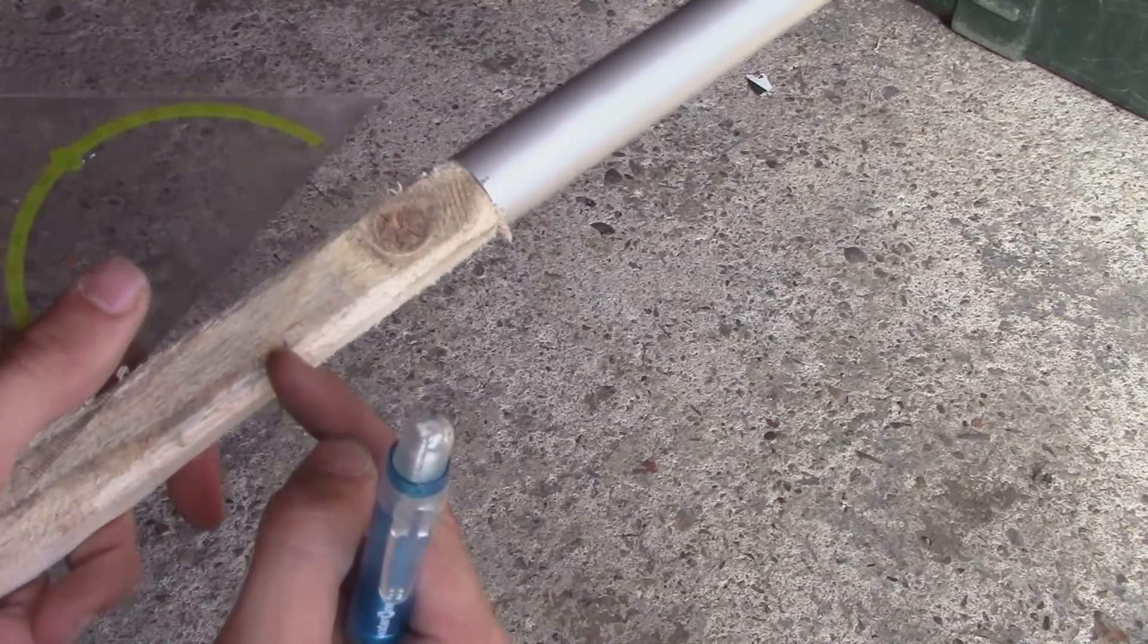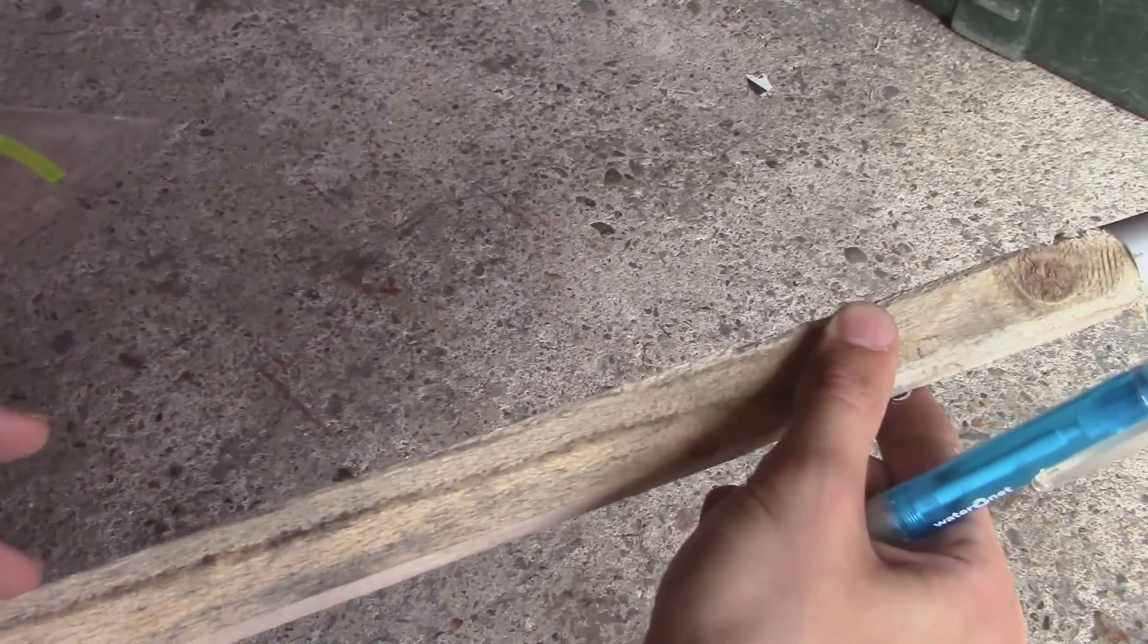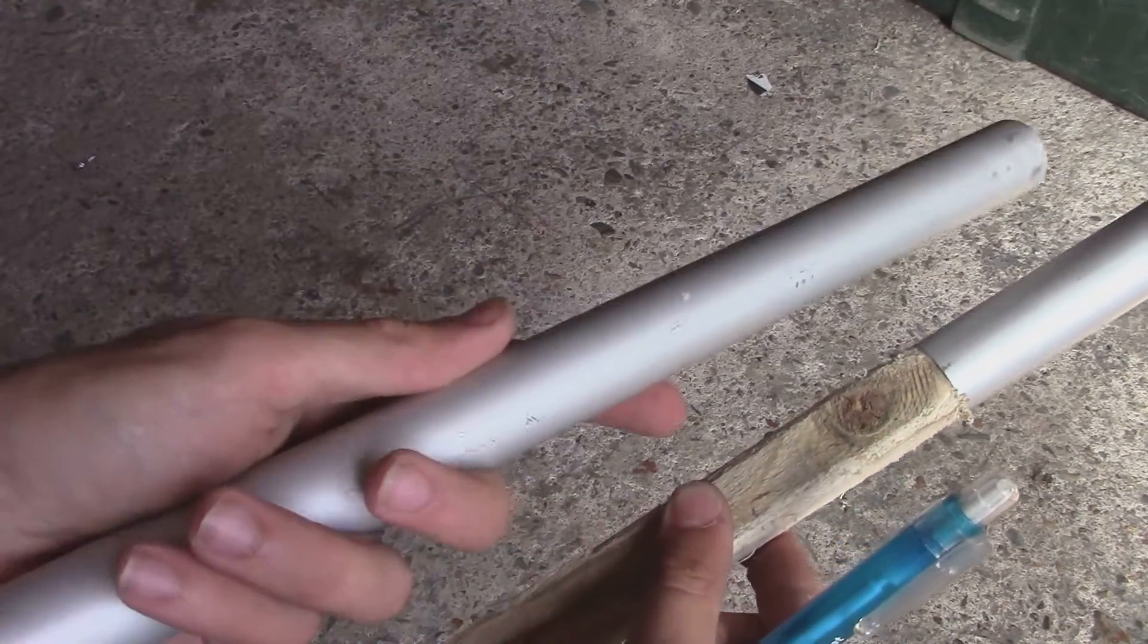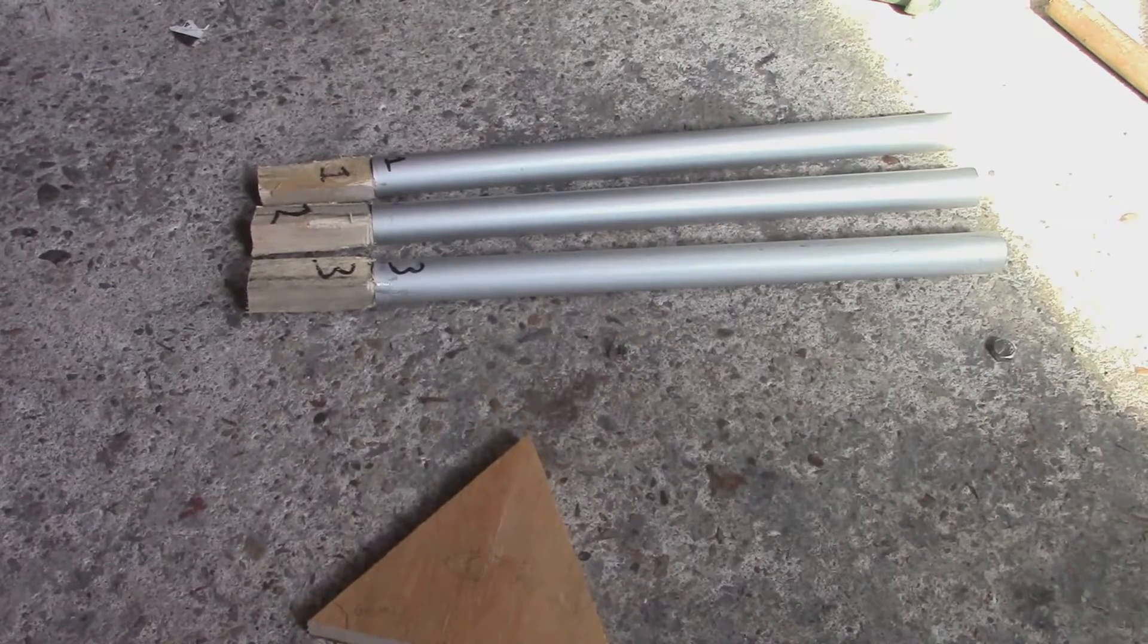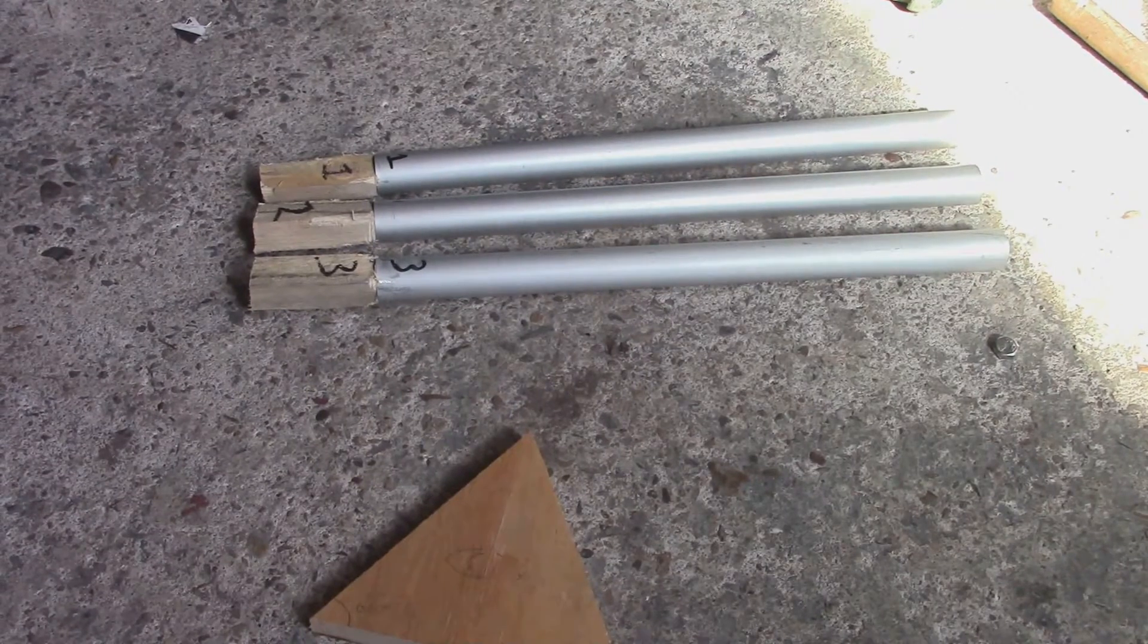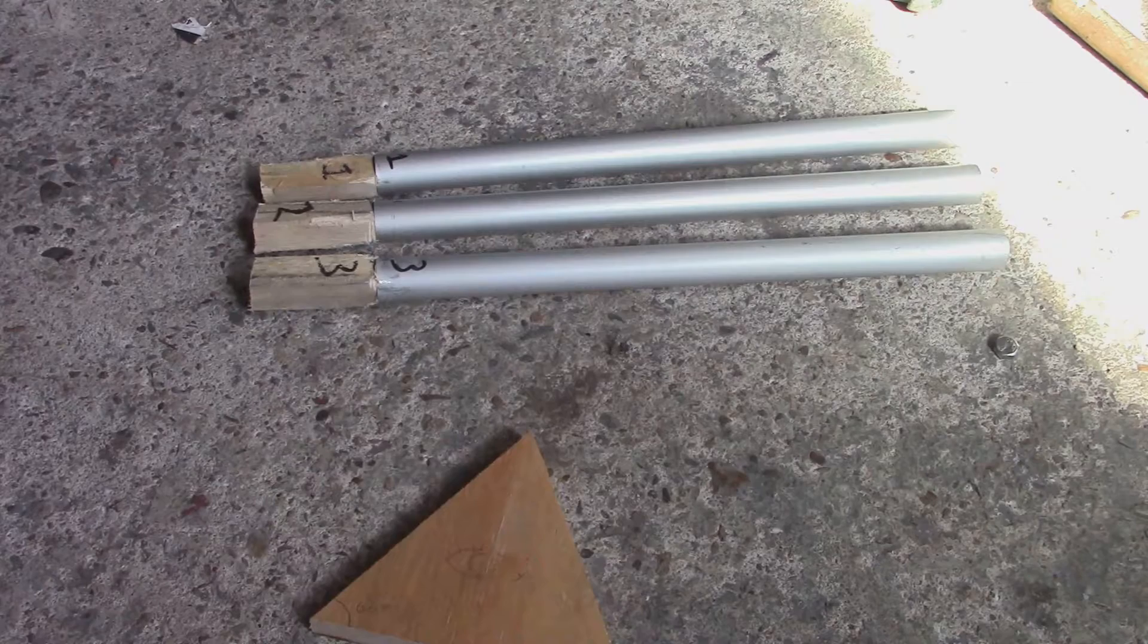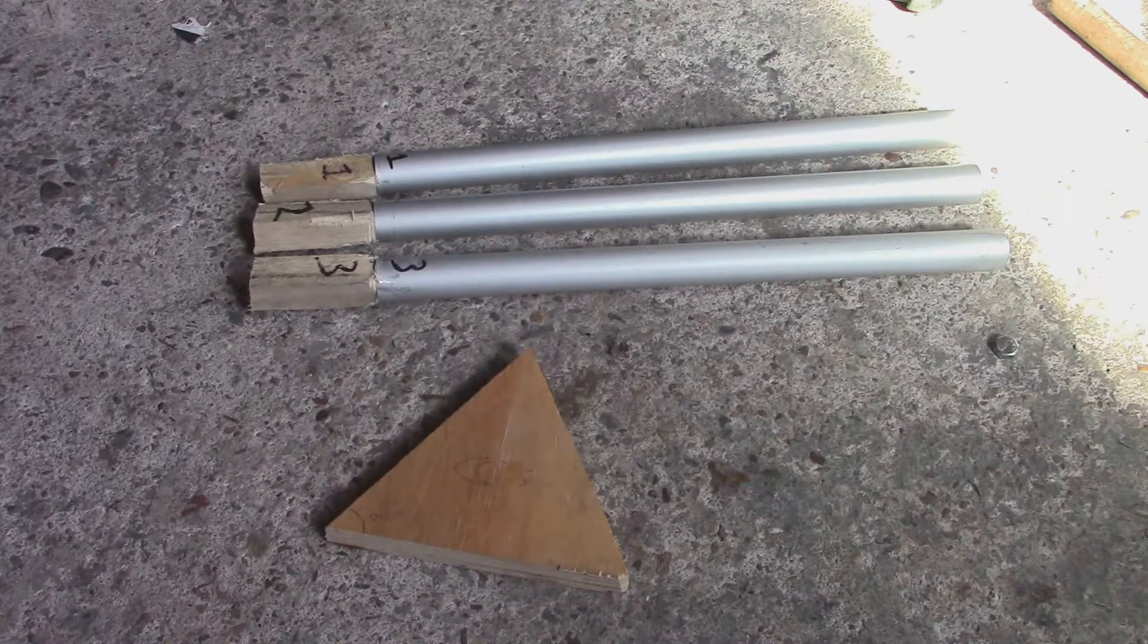This is where you're going to saw it off, right here. The piece of wood that remains, use that to do exactly the same for the other two tubes. Now we have three pipes, each with its own piece of wood that fits into it, and we've got our little triangle. Let's move on to the next step.